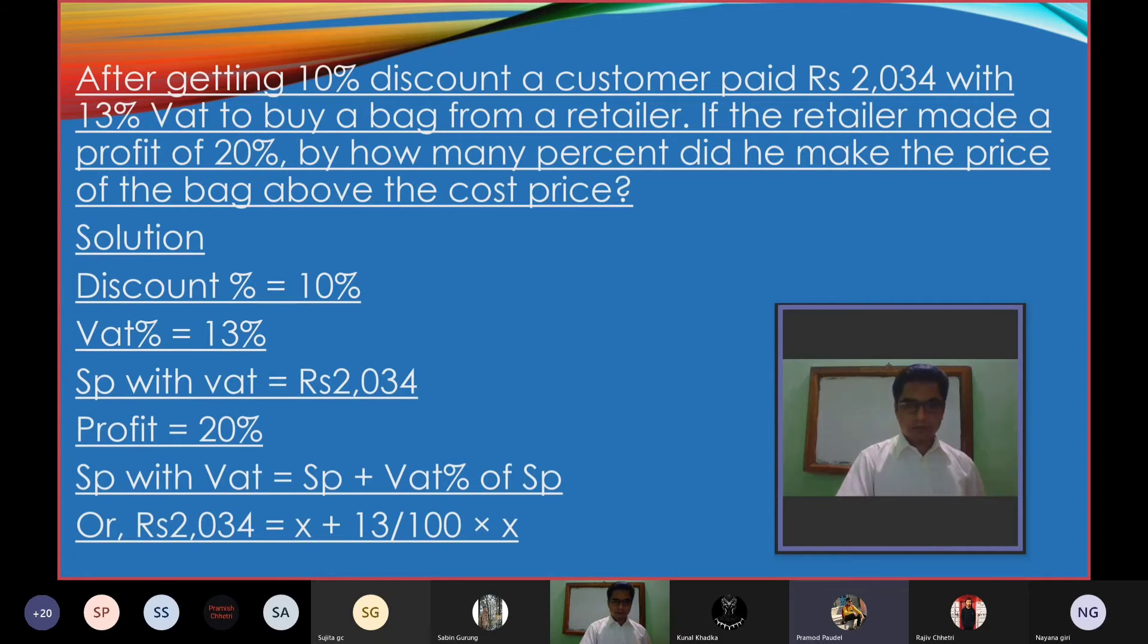After getting 10% discount, the customer paid Rs 2,034 with 13% cashback to buy a bag from a retailer. If the retailer made a profit of 20%, by how much percent above the cost price did he mark the price of the bag?